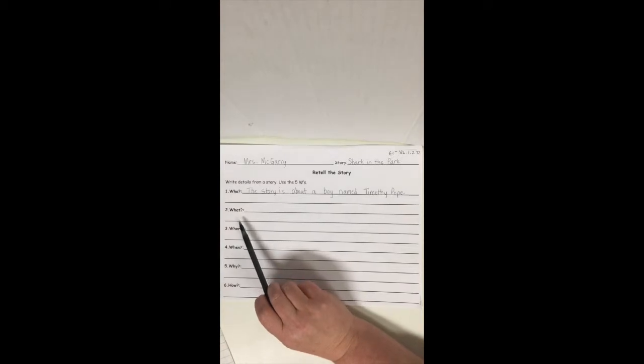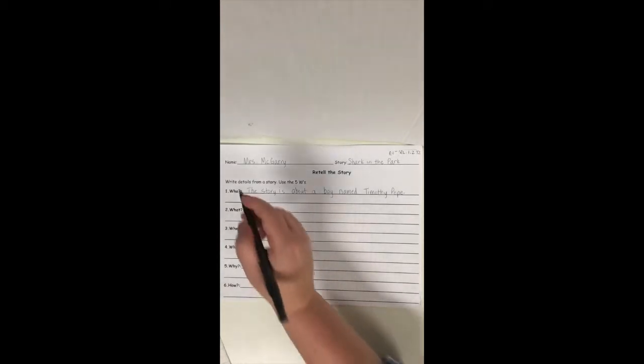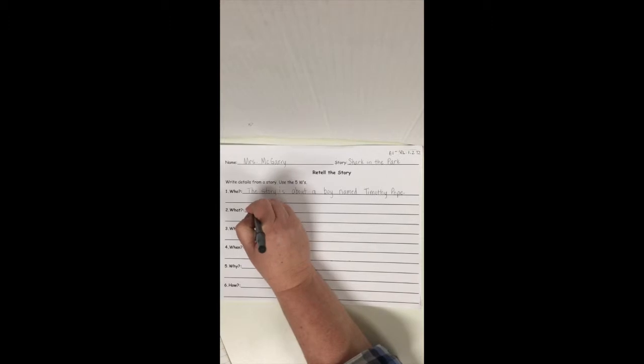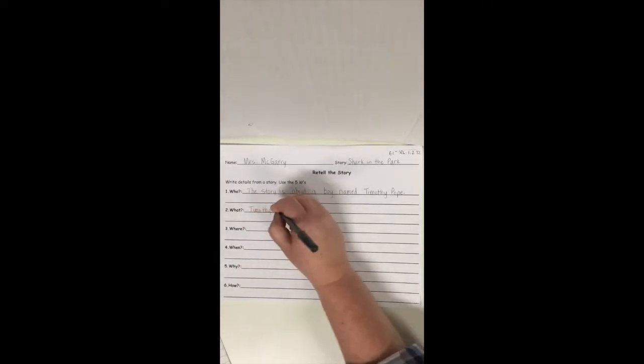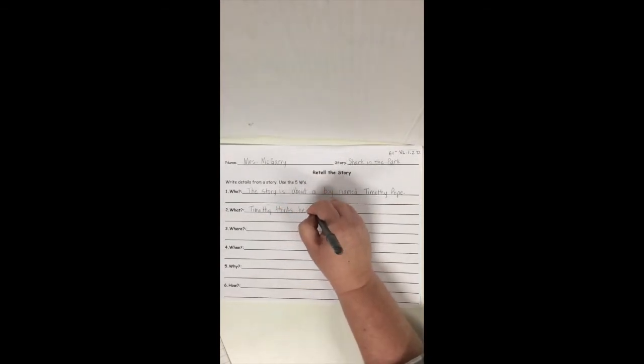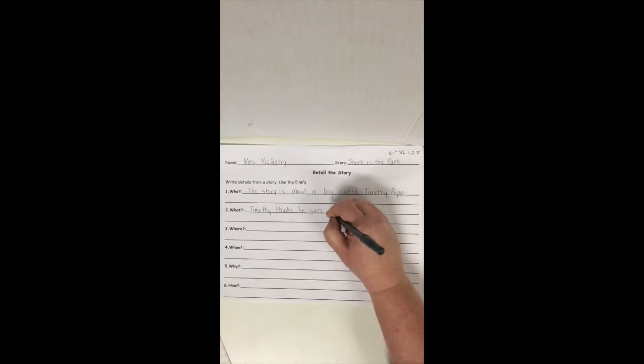So I've said a complete sentence. I have a capital letter and a period. And when I wrote his name, I put a capital for his first name and a capital for his last name. Now what? What is this story about? Is it about that he just got a telescope? No. What keeps happening in the story? Timothy thinks he sees a shark in the park. That's the best part. There's a shark in the park.